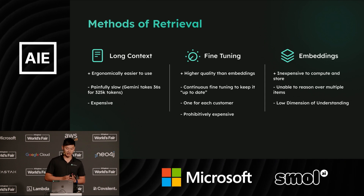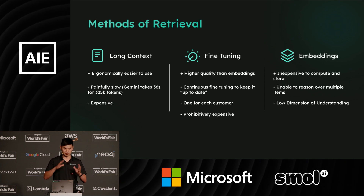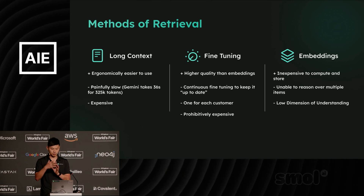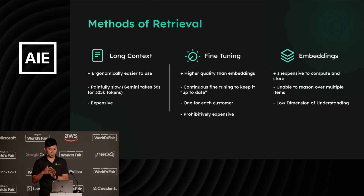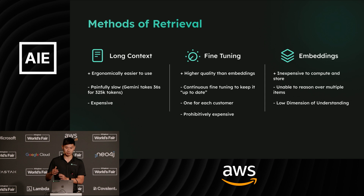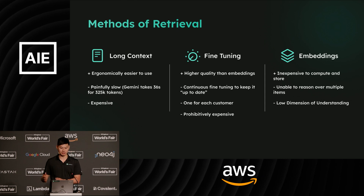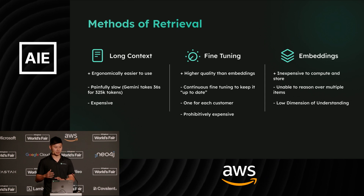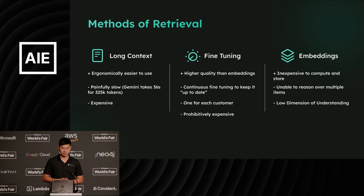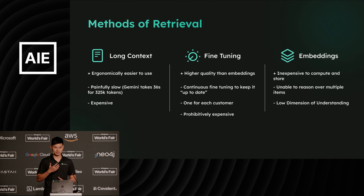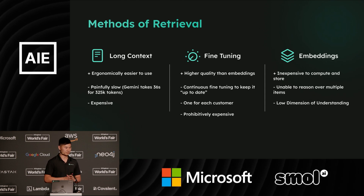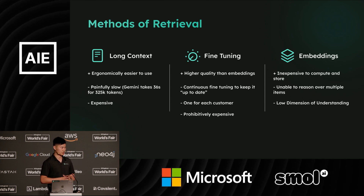The second method is fine-tuning. For those that are familiar, fine-tuning is the idea of actually tweaking the weights of your model to reflect the distribution of the data your consumer expects. This requires continuous updates, it's rather expensive computationally, you have to have one model per customer, and it's honestly prohibitively expensive for most applications.